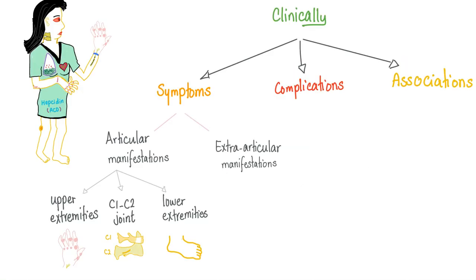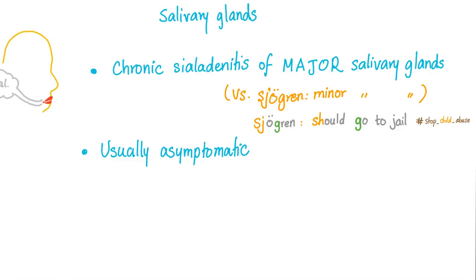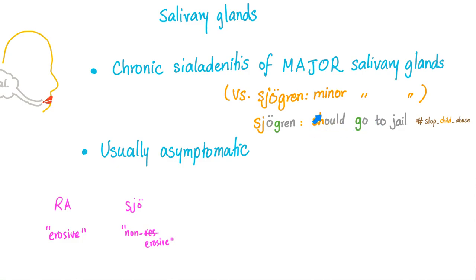Let me contrast rheumatoid arthritis and Sjogren's syndrome. One difference is that rheumatoid arthritis is an erosive arthritis, but Sjogren's is non-erosive — less destructive to joints. You can confirm erosive vs non-erosive with an X-ray of the joint. Another difference: rheumatoid affects major salivary glands, but Sjogren's affects minor salivary glands. That's why my mnemonic is 'Sjogren should go to jail' — because it affects minors.